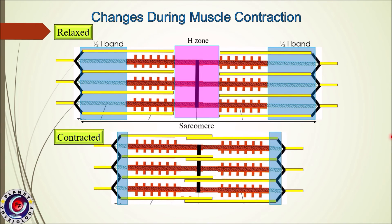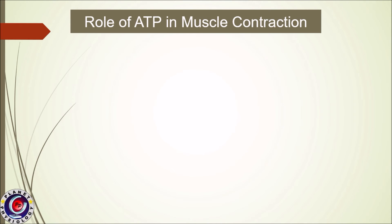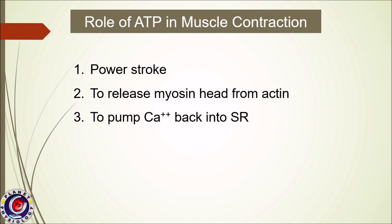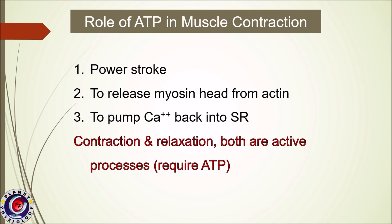What is the role of ATP during the contraction process? First, ATP is necessary to provide the power stroke which pulls the actin filaments. Second, it is necessary to release the myosin head from the actin filament — this has important applied significance which we will see shortly. Third, ATP is necessary for pumping calcium back into the sarcoplasmic reticulum so that the muscle relaxes. Hence, both contraction and relaxation of muscle are active processes.